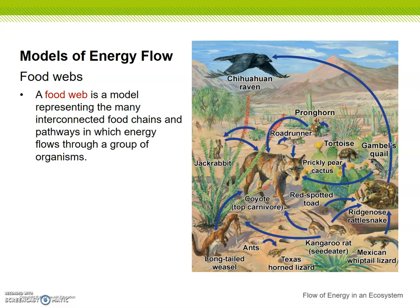Now a food web is a little bit more complicated than a food chain because it's not just one direct path — it intersects all those paths into one big web. Think of a spider web and how it branches out to connect. A food web is a model representing the many interconnected food chains and pathways in which energy flows through a group of organisms.